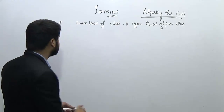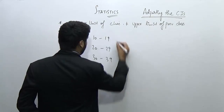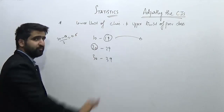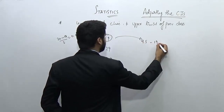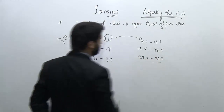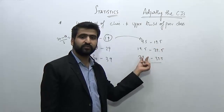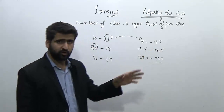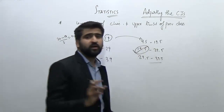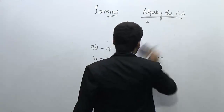Let's see one more example: 10 to 19, 20 to 29, 30 to 39. We compute 20 minus 19 divided by 2, which equals 0.5. So we subtract 0.5 and add 0.5, giving us 9.5 to 19.5, 19.5 to 29.5, and 29.5 to 39.5. Now the data is regular. Note: 19.5 is included in the second class — the lower limit is always included in a class, the upper limit is not.